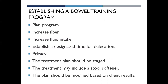For the bowel training program, plan the program with the client or caretaker. Start by gradually increasing fiber in the diet and monitor stool consistency. Increase fluid intake to eight glasses of eight ounces of water a day. Establish a designated uninterrupted time for defecation — typically in the morning after breakfast — and ensure privacy. Develop a staged treatment plan if constipation develops: start with additional fiber, then a stool softener, followed by a suppository. Modify the plan based on the client's results.